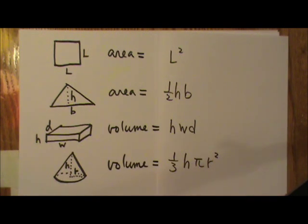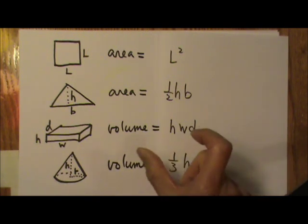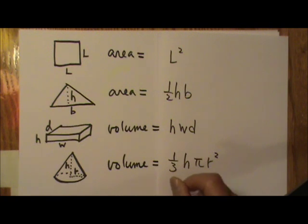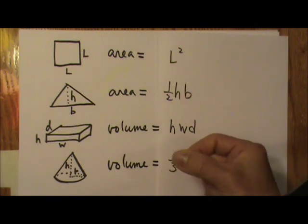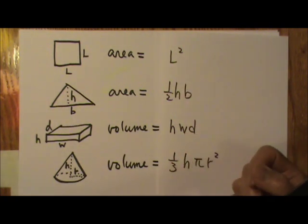In order to have volume, an object has to have some sort of width, some sort of height, and some sort of depth. Three dimensions. So the unit for volume would be length cubed. In standard units, it would be meters cubed.